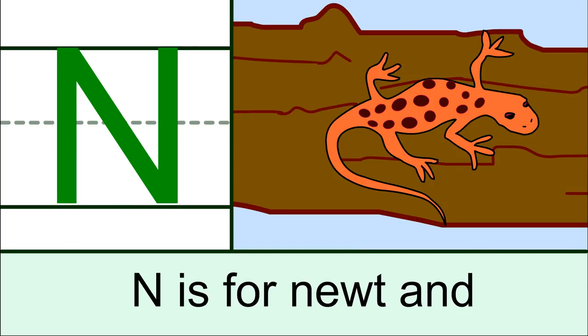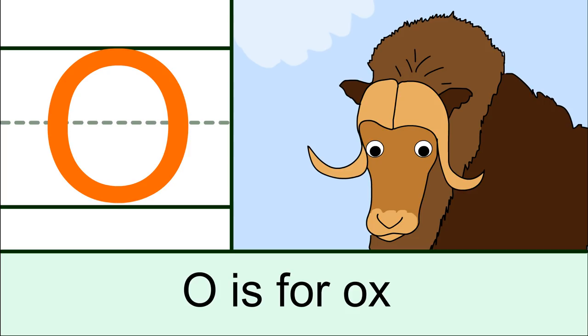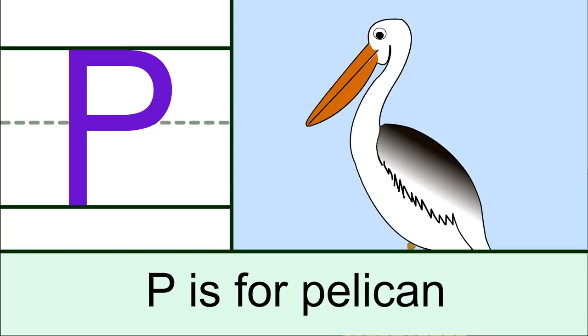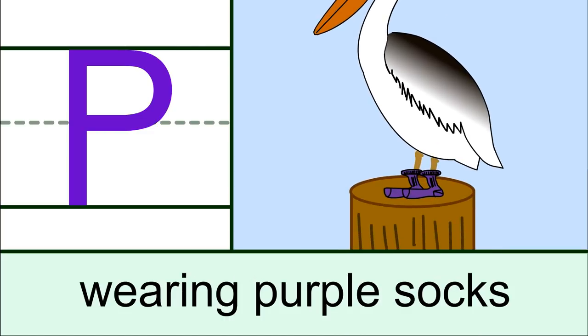N is for newt and O is for ox, P is for pelican, wearing purple sacks.